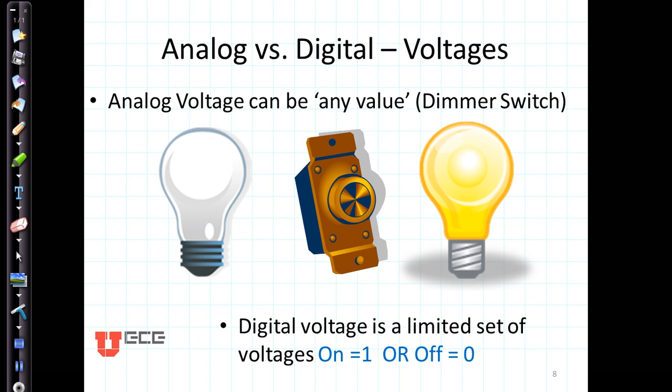When we talk about voltages, an analog voltage can have any value, such as the voltage going into a light bulb from a dimmer switch. The light will turn on at any little tiny amount of value. It's basically a potentiometer that controls the amount of voltage that's getting to the light. A digital voltage is a very limited set of voltages, more typical of your traditional switch. The light is either on, one, or it's off, zero.